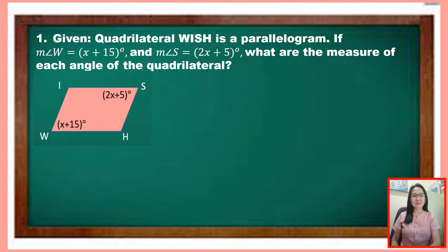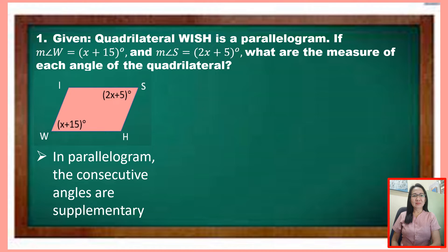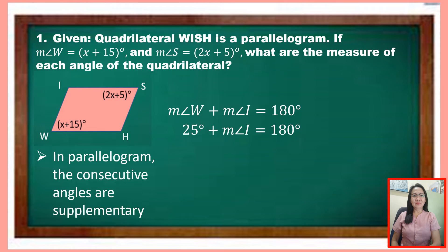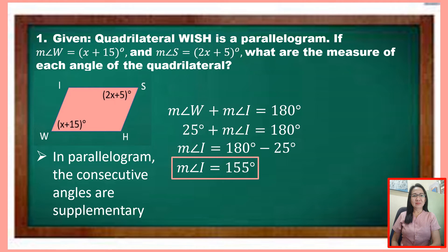Using the idea that consecutive angles in a parallelogram are supplementary, angle W and angle I are consecutive angles, so the measure of angle W plus the measure of angle I equals 180 degrees. Substituting 25 degrees for angle W, the measure of angle I equals 180 minus 25, which is 155 degrees. Since angle H and angle I are opposite angles, the measure of angle H is also 155 degrees.